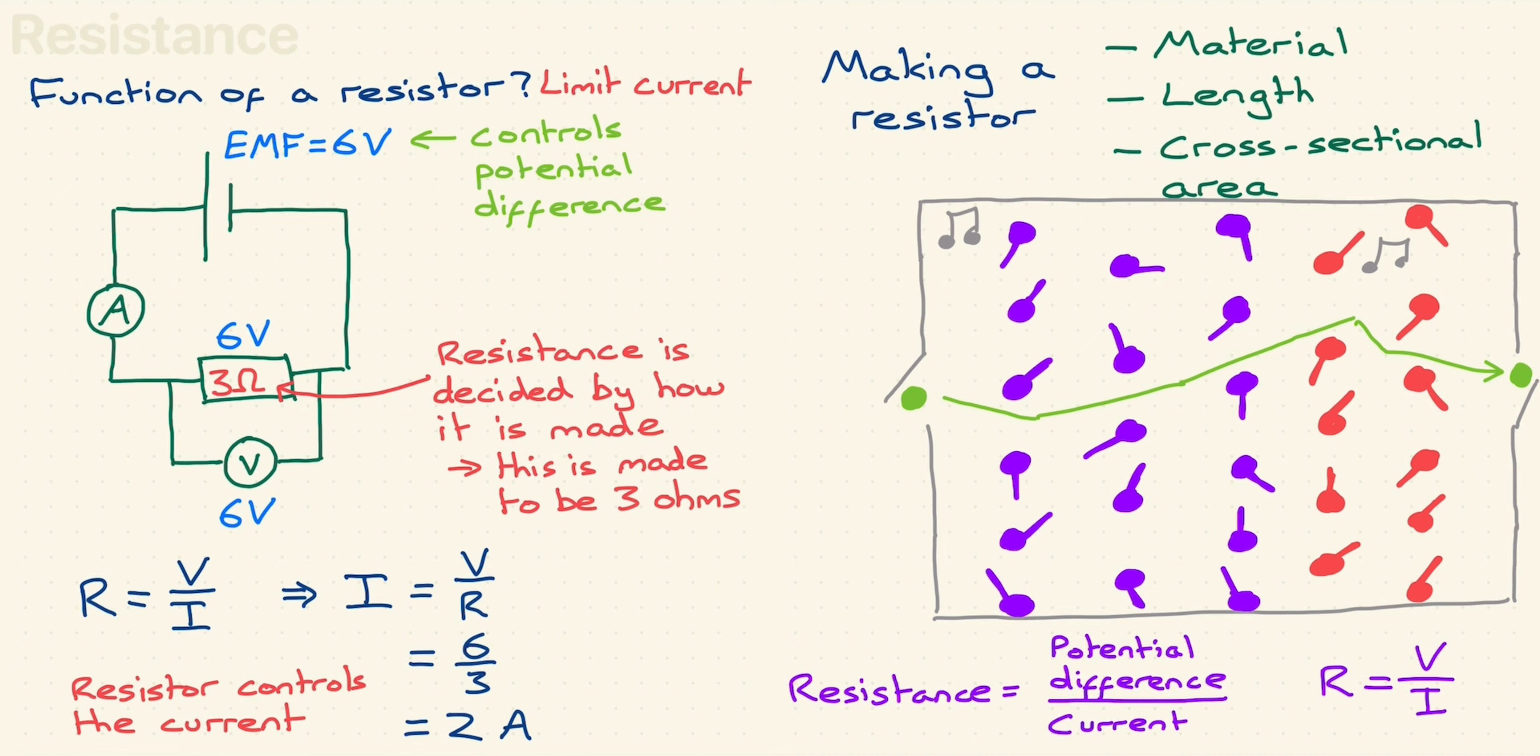In a wire, these things are like changing the length of the wire, changing the cross sectional area of the wire, changing the material of the wire, and changing the temperature of the wire. Four things that can affect resistance.